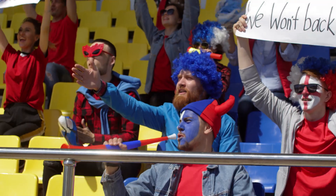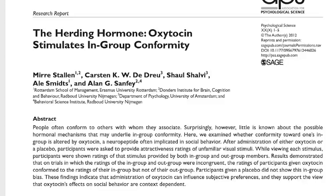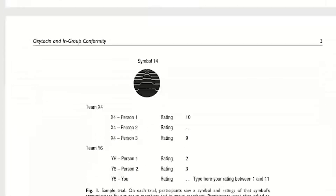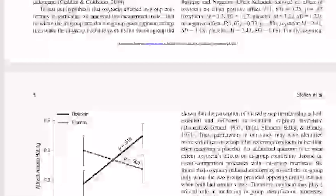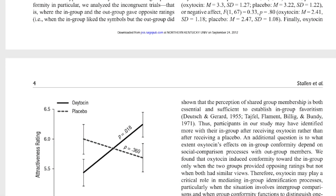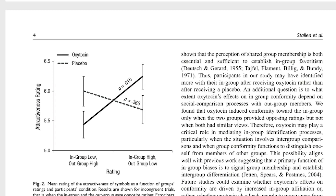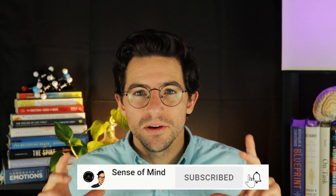Examples of in-groups include a family, friend group, political party, religion, or nation. While we naturally favor our in-group at the expense of out-groups, oxytocin enhances this bias. In one study, researchers randomly assigned participants to teams, gave them oxytocin via nasal spray, and then asked them to rate how attractive they found various symbols. When each symbol was shown, participants also saw ratings from their own team and the other team. Individuals who received oxytocin were more likely to agree with their team's ratings and disagree with the other team. So oxytocin appears to increase group conformity.